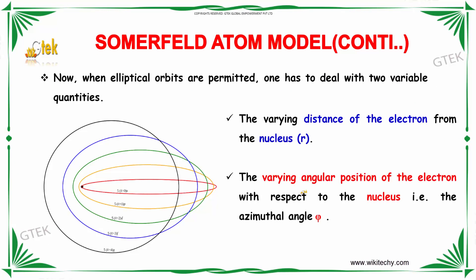When elliptical orbits are permitted, one has to deal with two variables: the varying distance of the electrons from the nucleus, and the varying angular velocity or position of the electron with respect to the nucleus, that azimuthal angle. So distance and angle.